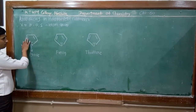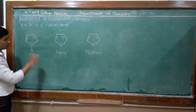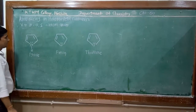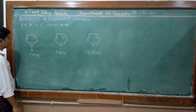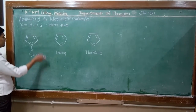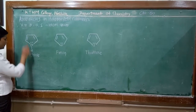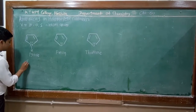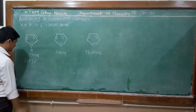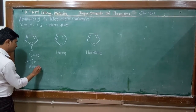These compounds are cyclic, planar, fully conjugated, and containing 6 pi electrons. Why do these compounds contain 6 pi electrons? There are 2 pi bonds and one lone pair of electrons, therefore there are 6 pi electrons, and therefore these compounds are aromatic compounds.